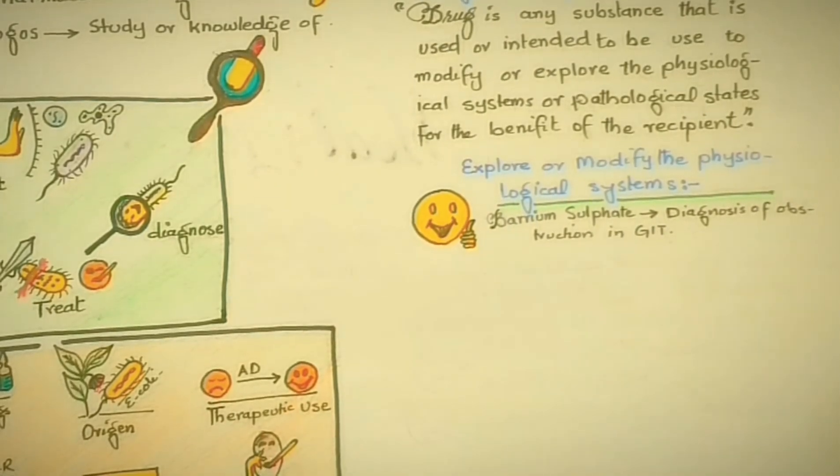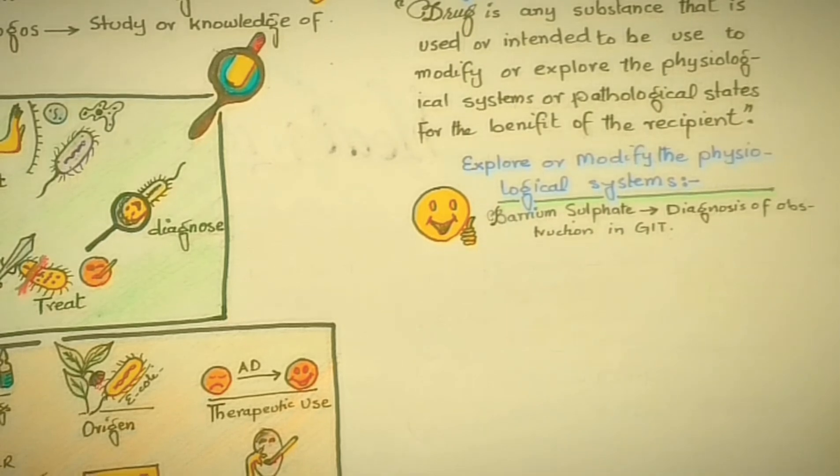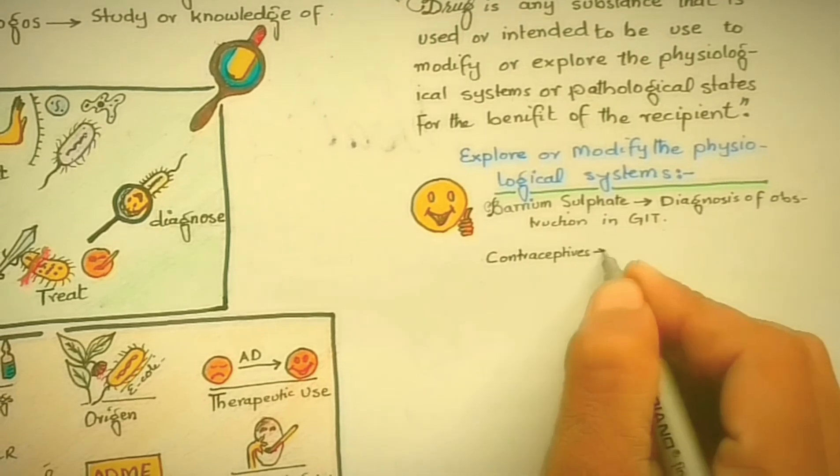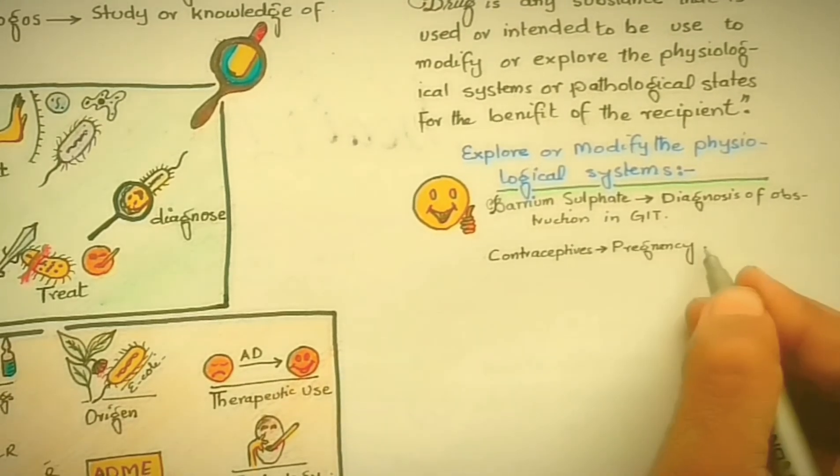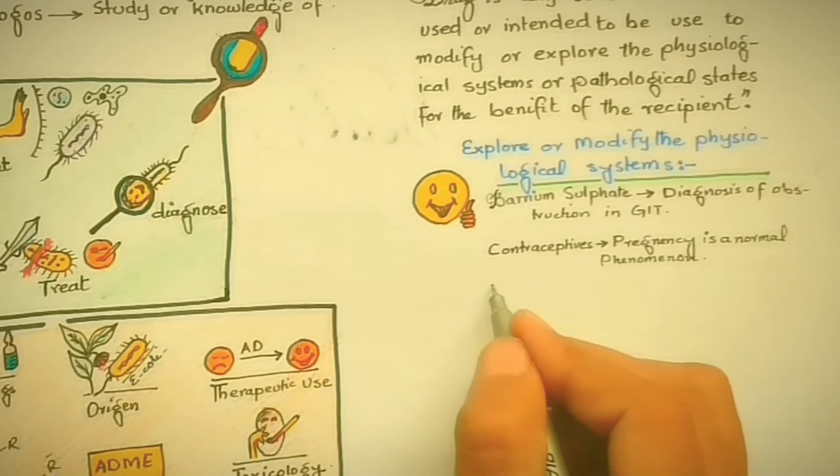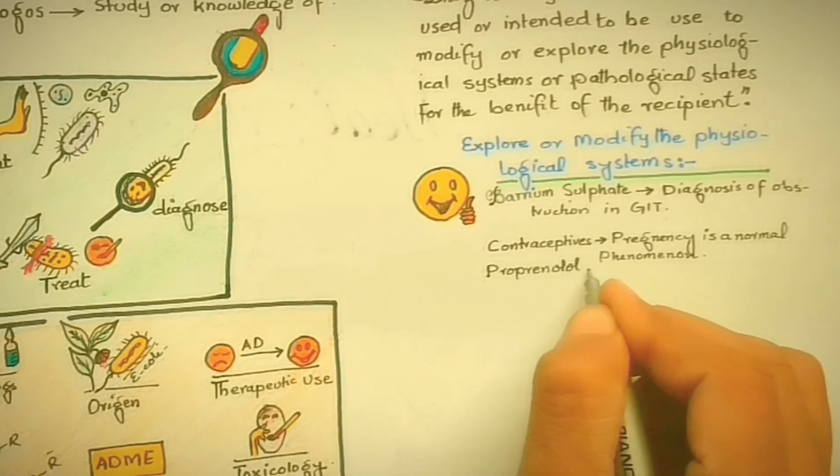Drugs used to modify normal functioning of the body include contraceptives which inhibit pregnancy, and ferrous sulfate which is sometimes used for stage fright.